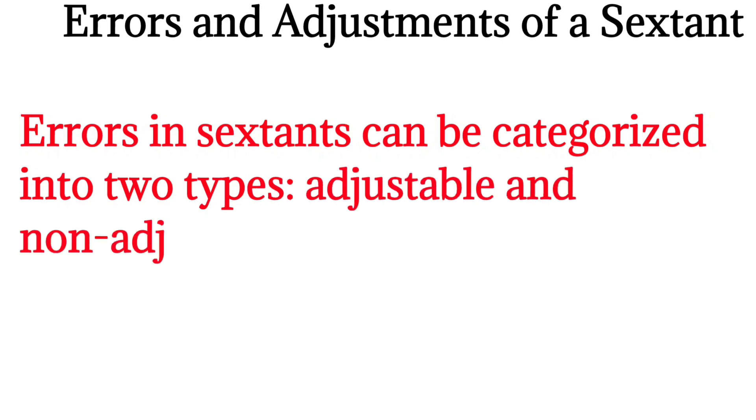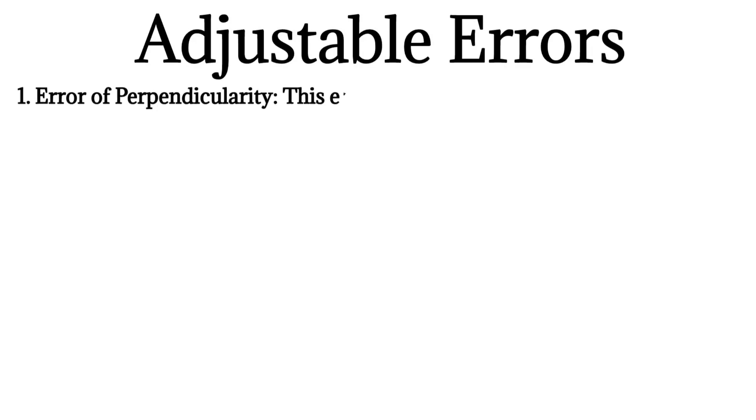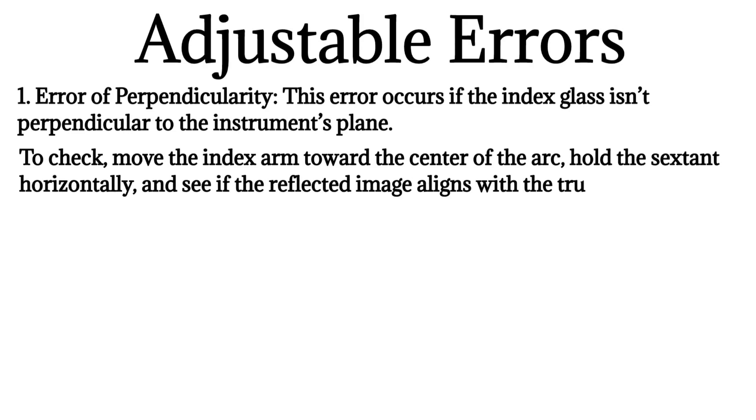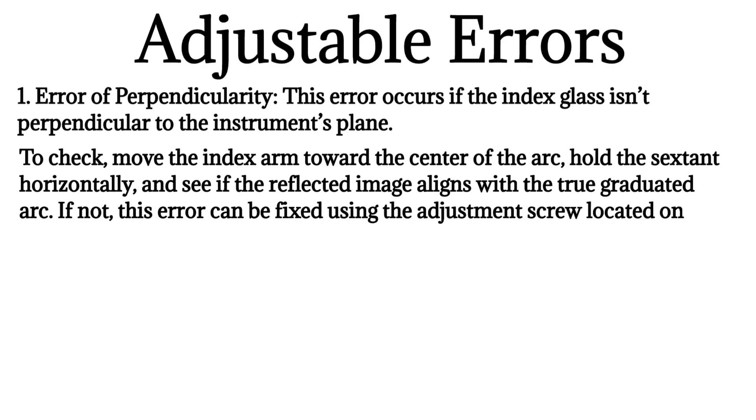Adjustable errors. First, error of perpendicularity. This error occurs if the index glass isn't perpendicular to the instrument's plane. To check, move the index arm toward the center of the arc, hold the sextant horizontally, and see if the reflected image aligns with the true graduated arc.